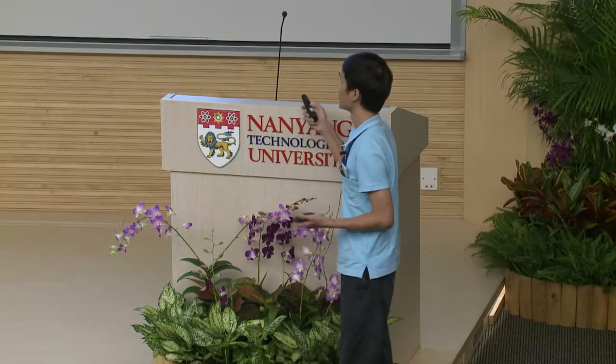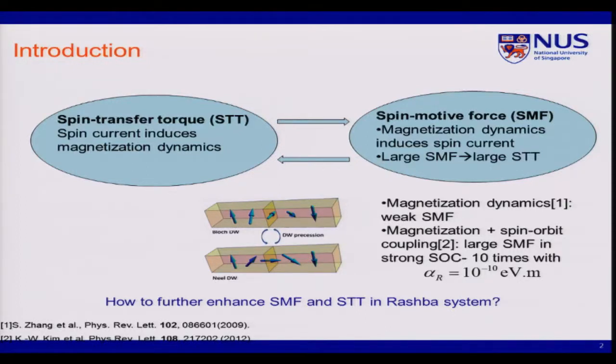A little bit about background. You know that the angular momentum can be transferred between two particles or two objects. So if we inject a spin current into a magnetic system, the angular momentum can be transferred from the spin current into the local magnetization so that it can induce the magnetization dynamics.